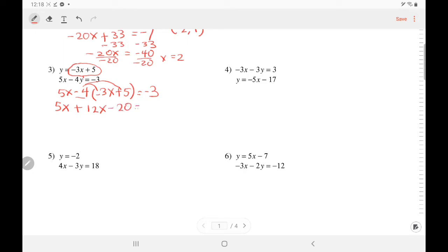Negative 4 times 5, negative 20 equals negative 3. Add like terms, that's 17x minus 20 equals negative 3. Add 20, 17x equals 17. Divide. x equals 1.